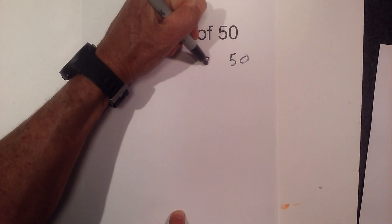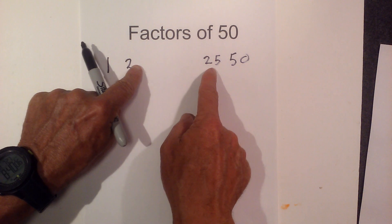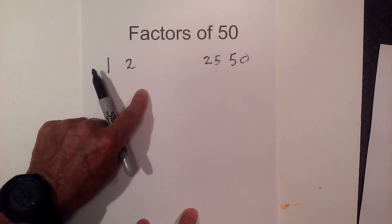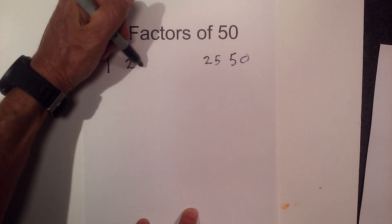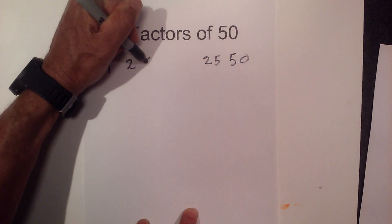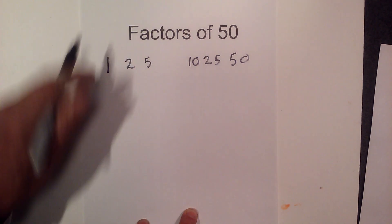So I'm going to go 2 times 25, and as it goes in, there's not any more numbers in the middle. So 2 times 25 is 50. Now 3 will not go into 50. 4 does not go into 50, but 5 times 10 goes into 50.